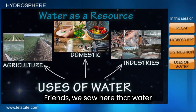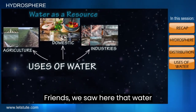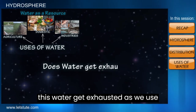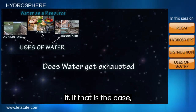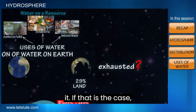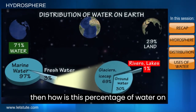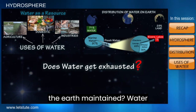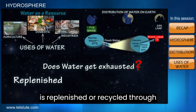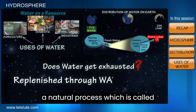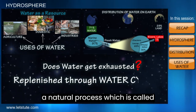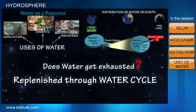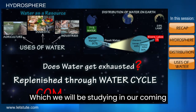Water has many different uses. But does all this water get exhausted as we use it, and how is the percentage of water on Earth maintained? Water is replenished or recycled through a natural process called the water cycle, which we will be studying in our coming sessions.